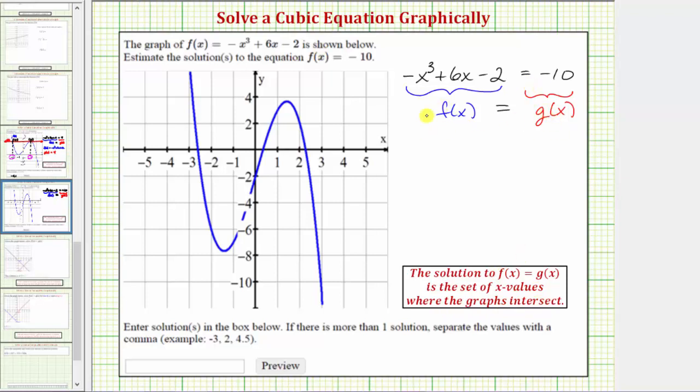Which means to solve this equation graphically, we need to graph f(x) equals negative x cubed plus 6x minus 2, which is already provided graphed here in blue. So this is f(x).